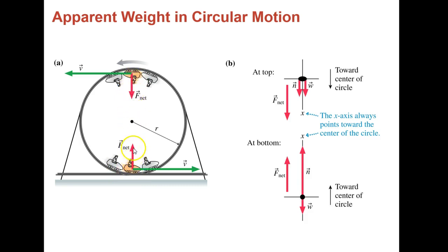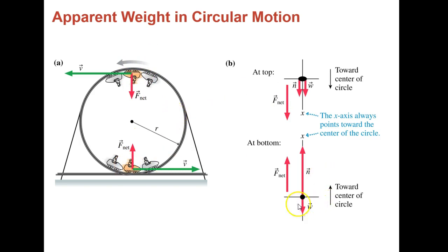Because your net force — your centripetal force — if it's a perfect circle, is constant. Think of it in terms of those vectors: at the top, weight and normal force are going in the same direction because the normal force acts perpendicular to the surface. So you add them together to get an equal net force to keep your centripetal force constant. At the bottom, that centripetal force value is still constant going up, but now your weight is going downward, so it's a subtraction problem.